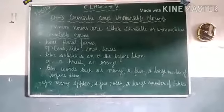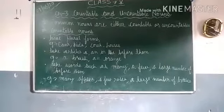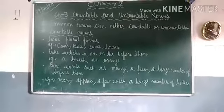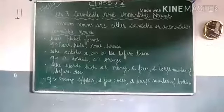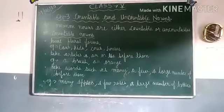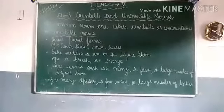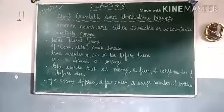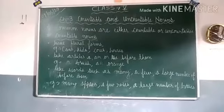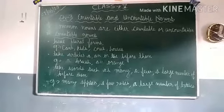Good morning, children of Class 5. In the last video we studied the first and second chapters of your grammar book, and today we are going to start a new chapter: countable and uncountable nouns. Countable nouns are those nouns which can be counted, and uncountable nouns are those nouns which cannot be counted.